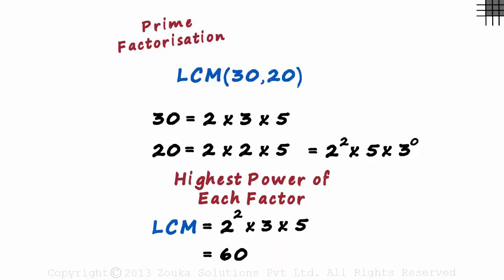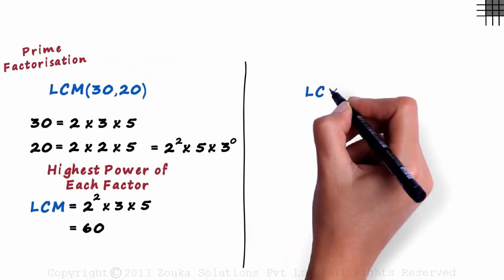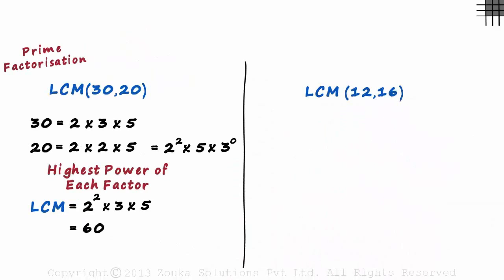You should note that we are considering the highest power of each factor, whether it is shared or not. We will find the LCM of 12 and 16 using this same technique.